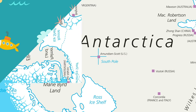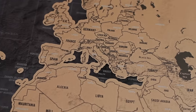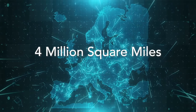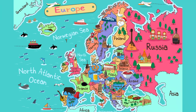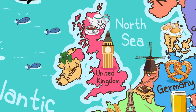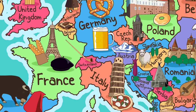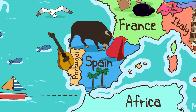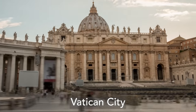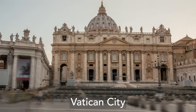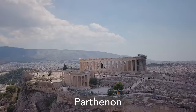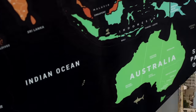Next we head way up north to Europe, the sixth largest continent on earth. What it lacks in size it makes up for in people — at just under 4 million square miles, it has over 740 million residents. Some of the most well-known countries in the world are in Europe, such as France, the United Kingdom, Germany, Italy, and Spain. In all, there are 44 countries in Europe. The smallest country, Vatican City, is located in the heart of Rome and is only the size of a small suburban neighborhood. Europe has Big Ben, the Eiffel Tower, the Roman Colosseum, the Parthenon, and lots of other famous tourist attractions.